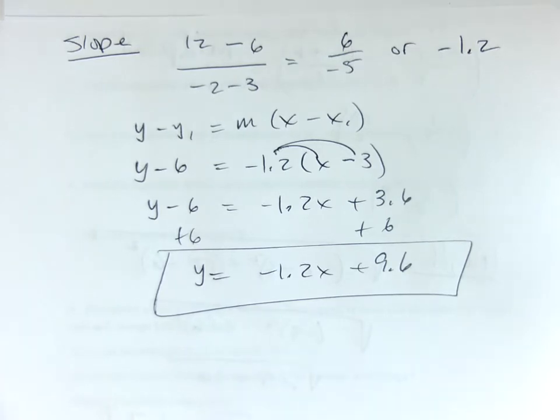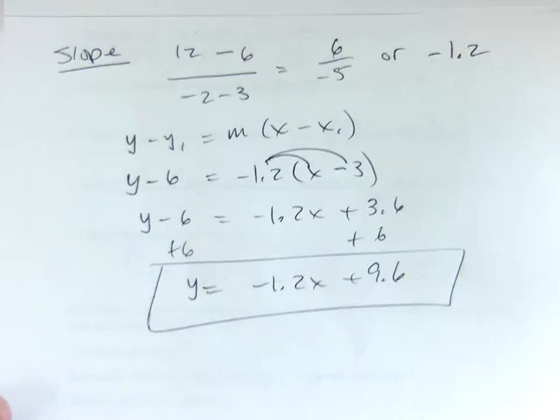Y equals negative 1.2x plus 9.6, okay? Lauren, if I make a dumb mistake, will you tell me nicely? Yes. Thank you. All right, number three.